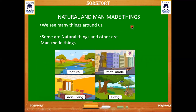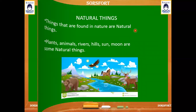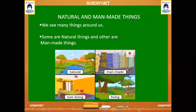Natural and man-made things. What all we see around us? Many things, right? In that, some are natural things and other are man-made things. Natural things are the gift from nature, which directly came from the environment, like mountains, sky, clouds, trees, water, animals, plants, etc.